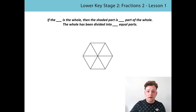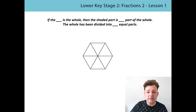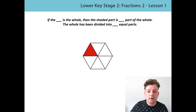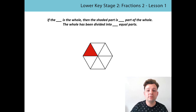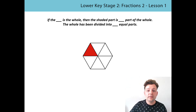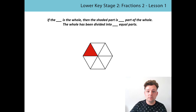For this one, have you noticed how the whole has stayed the same? But the amount of equal parts we have are different — we have one, two, three, four, five, six equal parts. Part of the whole is shaded. I'm going to read the stem sentence: If the hexagon is the whole, then the shaded part is one part of the whole. The whole has been divided into six equal parts. Pause the video and try to read the stem sentence yourself.